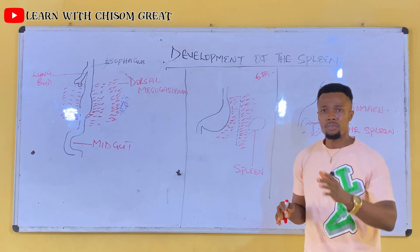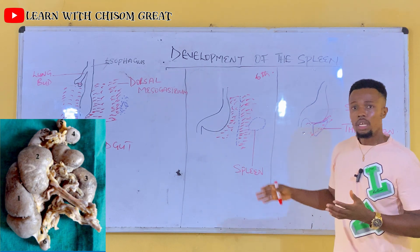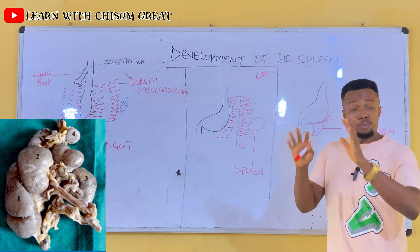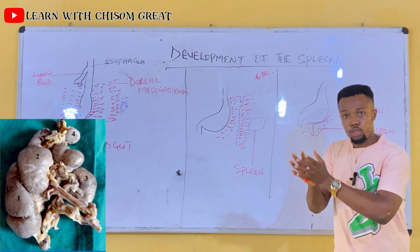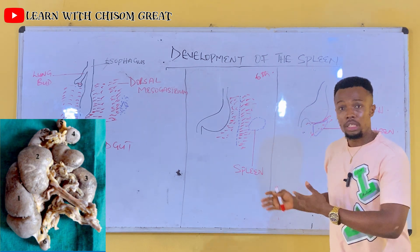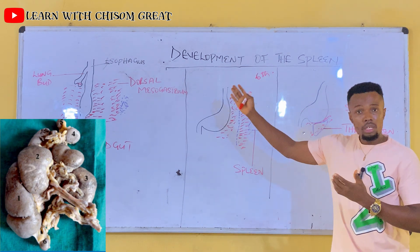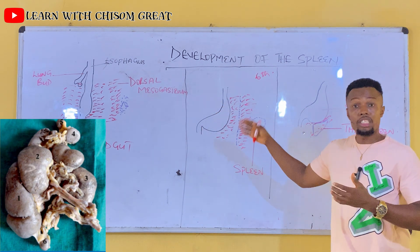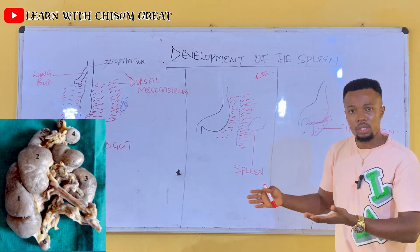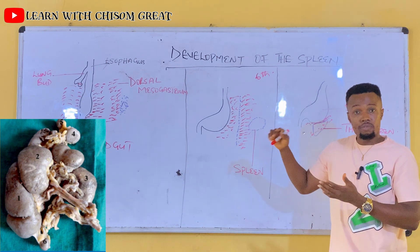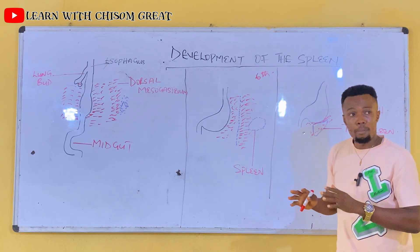We also have lobulation of the spleen. This is the situation where the spleen forms as a single mass — a single nodule of tissue — but in this situation it is lobulated, just like the liver; it is divided into distinct lobes or nodules. So that is what lobulation of the spleen means, and it is a congenital anomaly.